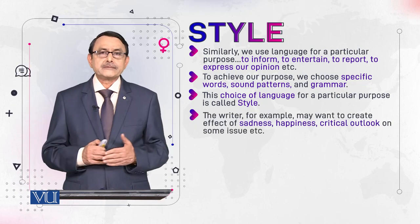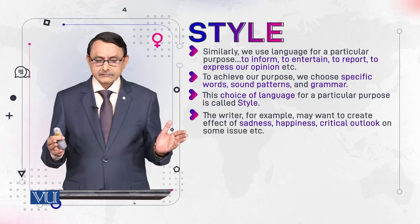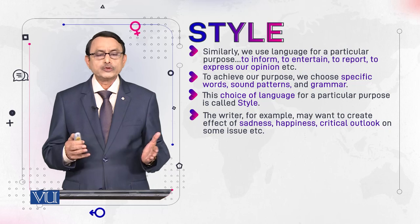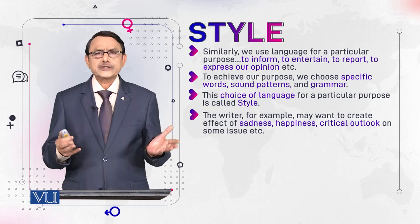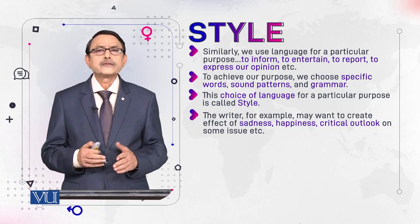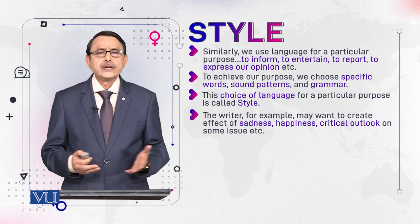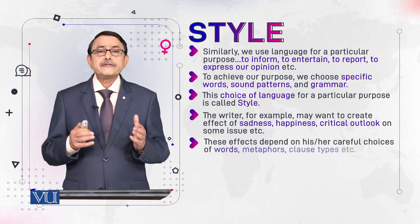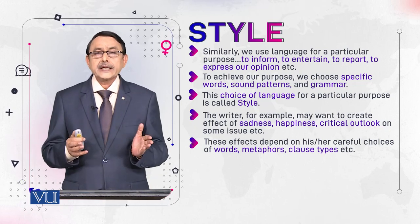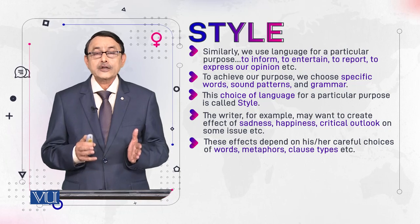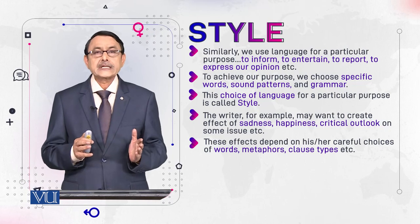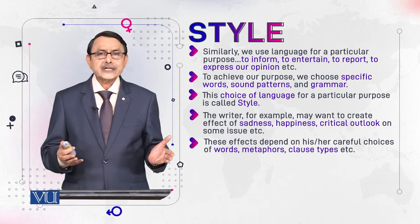The writer may want to create an effect of sadness, happiness, or a critical outlook on some issue — a social issue, an issue of marriage, joblessness, or any other social issue. These effects depend on the writer's intentional, careful, conscious selection of words, metaphors, clause types, sentence structure, and so on.